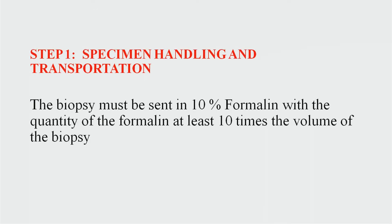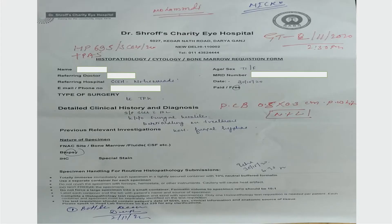Specimen handling and transportation: the biopsy must be in 10 percent formalin, and the quantity of formalin should be 10 times the volume of the biopsy. This is what a typical histopathological form looks like. It must have the patient details — MRD number, identification number, date sent, age, sex, and name. A brief clinical detail is extremely important in histopathological examinations.